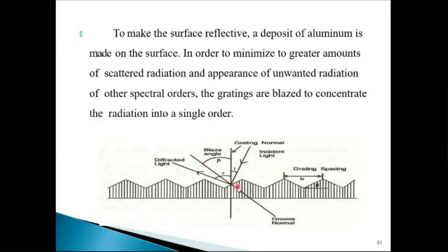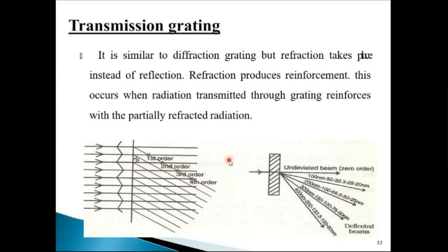If you draw a perpendicular on the surface, the angle made to the original perpendicular drawn on the surface of the grating is called the blaze angle. The second type of grating is the transmission grating. It is similar to a diffraction grating, but diffraction takes place by transmission instead of reflection. Reflection produces refraction that produces reinforcement — that is, constructive interference. This occurs when radiation transmitted through the grating reinforces with partially reflected radiation; basically, instead of getting reflected, the incident beam passes through the surface.